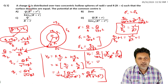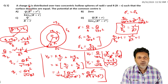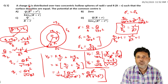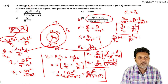Taking LCM and simplifying further, the potential at the center is V = Q(r + R) / [4πε₀(r² + R²)]. This is the most appropriate option among the given choices.